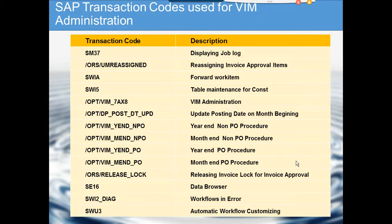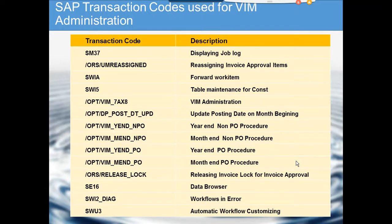The next transaction code is /ORS_UM reassign, which is used for reassigning invoice approval work items. When assigning approval work items, you cannot use SWIA, because the approval work item is a special work item. There are lots of things that need to be changed in the technical portion, like the workflow container. If you use SWIA to reassign an approval work item, it will not work for the person you are forwarding to.